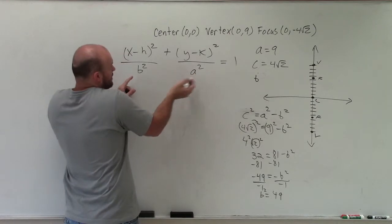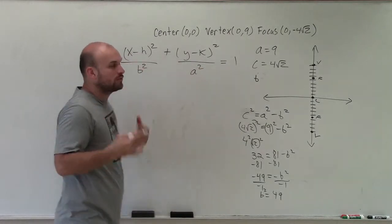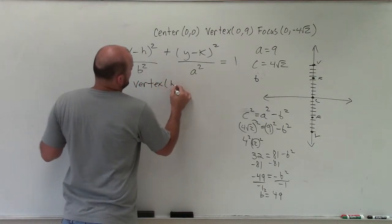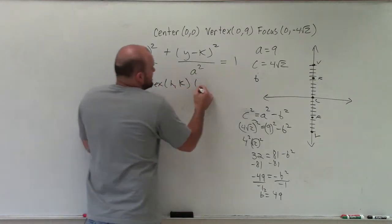a² is 9², which is 81. Now I need to determine what h and k are. Well, h and k represent the center. The center is (h, k). Well, my center is at (0, 0).